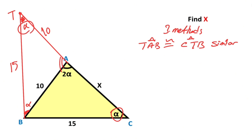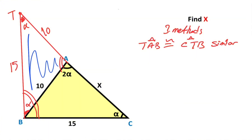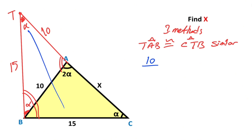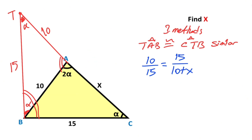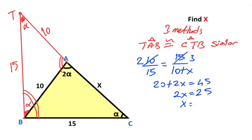Notice that these two angles are equal, which means the third angle must also be equal. If you start the calculation with this triangle: 10, which is opposite alpha, over 15, which is opposite alpha, must equal 15, which is opposite the double angle, over 10 plus X, which is opposite the double angle. Simplifying the expression gives 20 plus 2X equals 45. That means 2X equals 25, so X is going to be 12.5 units.